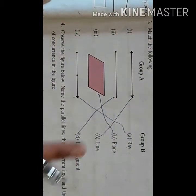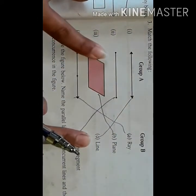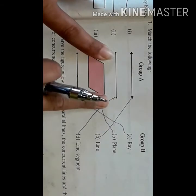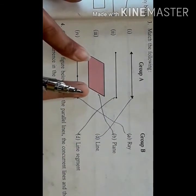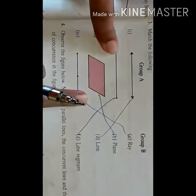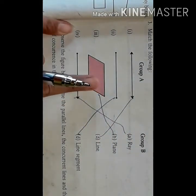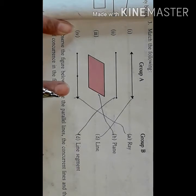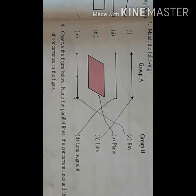Now moving towards match the pairs. Lines with arrows on both sides are lines. Lines with dots at both ends are line segments. A figure whose opposite sides never cross and go parallel is a plane. And a figure with one point and one arrow is a ray.